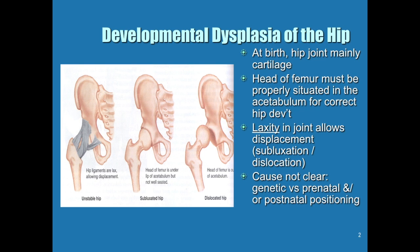We don't really know why it happens. Is it a genetic disorder, because there is some family history? Is it something that happened prenatally in their development? Or did it have something to do with postnatal positioning? One of the reasons why we are not wrapping babies very tight right now is because the current thought is we are encouraging developmental dysplasia of the hip.